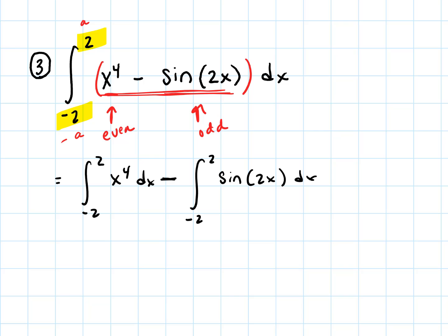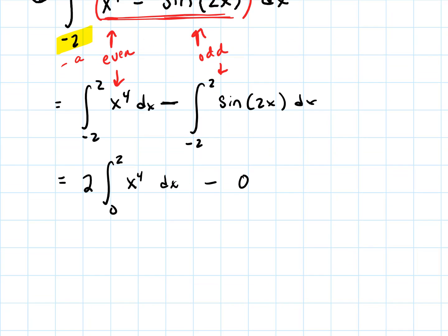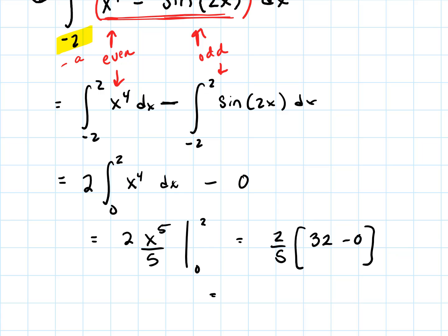Don't forget your differential on each one. Since the first term is even, I rewrite it as 2 times the integral from 0 to 2 of x to the fourth dx by symmetry. And since the sine of 2x term is odd, it's just 0 — the integral from negative 2 to 2 of sine of 2x is just 0. Then we finish it out: 2 times x to the fifth over 5, evaluated from 0 to 2, gives 2 times 32 over 5 minus 0, which is 64 fifths. That is the answer.